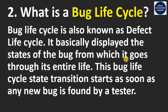This bug life cycle state transition starts as soon as a new bug is found by a tester. The bug life cycle basically contains different states of a bug and their transitions — how a particular bug moves from one state to another state.